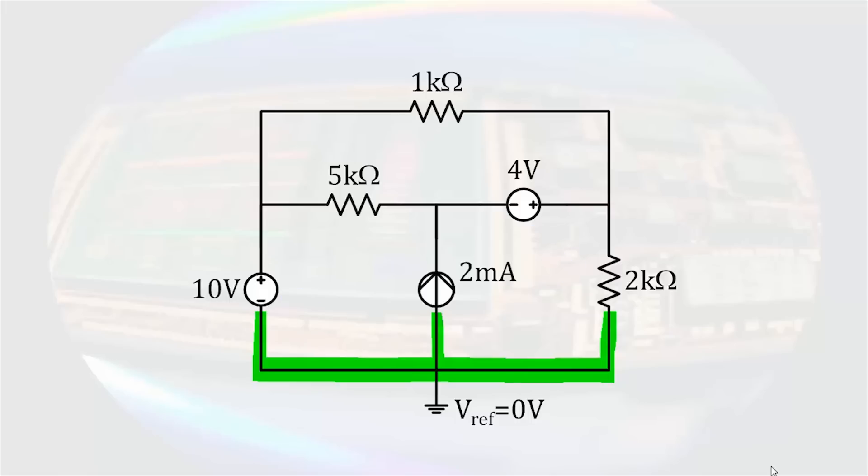The next step is to identify the remaining nodes. With that done, we'll look to the voltage source that is connected to the reference node. The 10 volt source is connected to the reference node. That will make the voltage of the left hand node equal to the value of the source, in this case 10 volts. The remaining two nodes will be assigned variables. I'll creatively call them VA and VB.